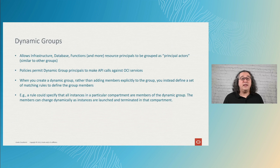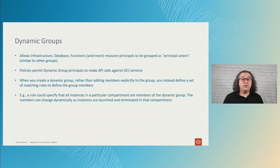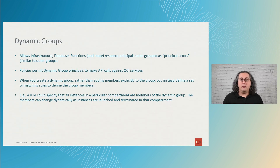The same way groups are used to gather similar users, dynamic groups are used to group similar principals represented by infrastructure resources and services. Dynamic groups can be used as subject clauses when defining the API calls that a policy allows. Unlike user groups where you assign users to a group, dynamic groups use a set of rules to define membership. An example rule could be all instances in a given compartment — as instances are created or deleted, the members are automatically adjusted.